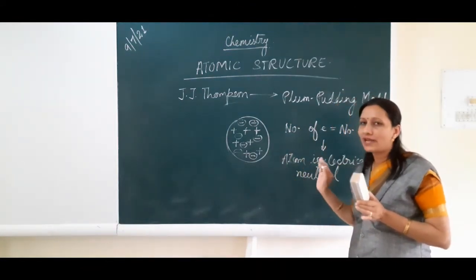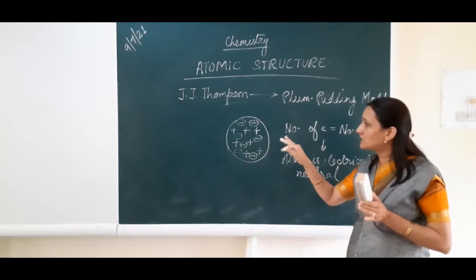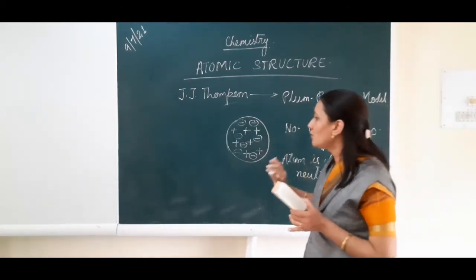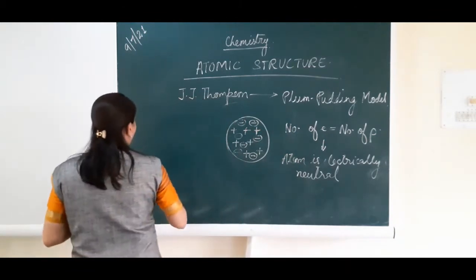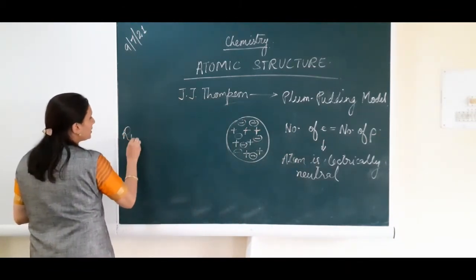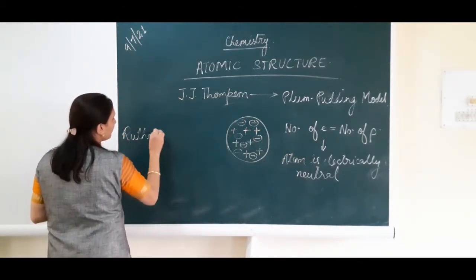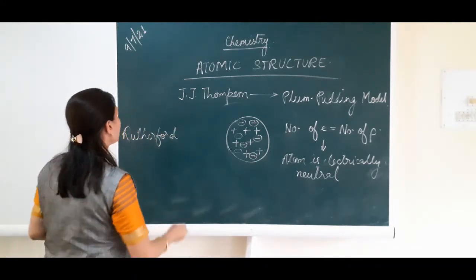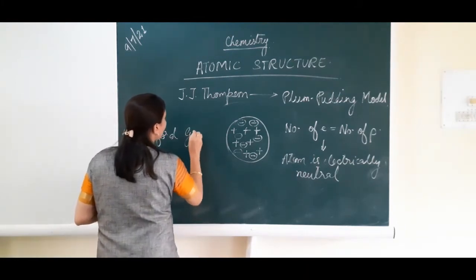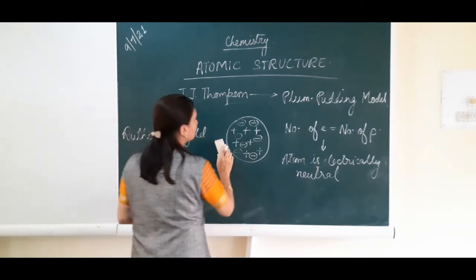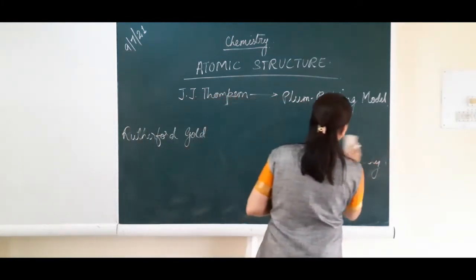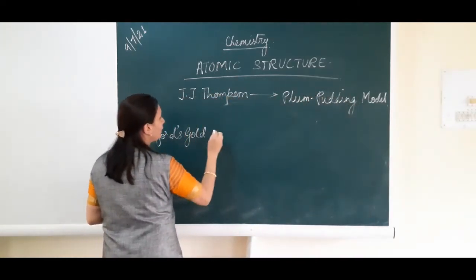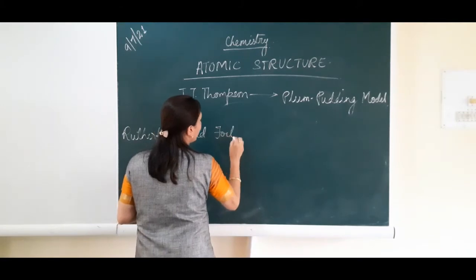Somewhat the Plum Pudding Model is acceptable, but we cannot fully accept it. Why? Because the way he distributed electrons and protons was not correct. According to modern research, Rutherford conducted one experiment known as the Rutherford Gold Foil Experiment.